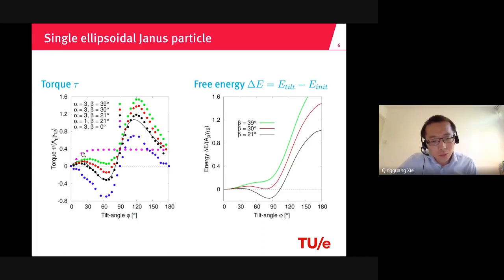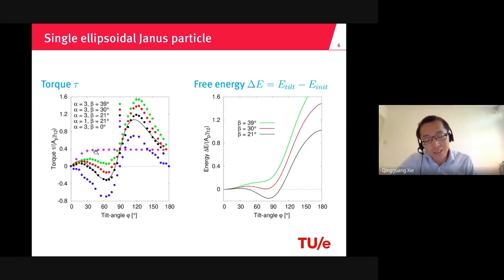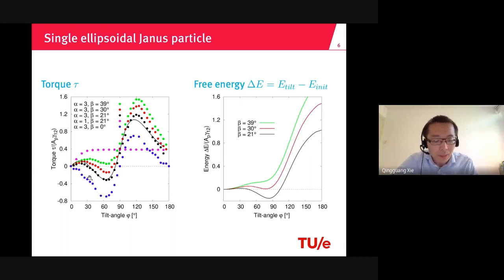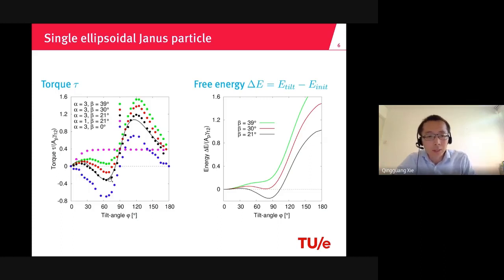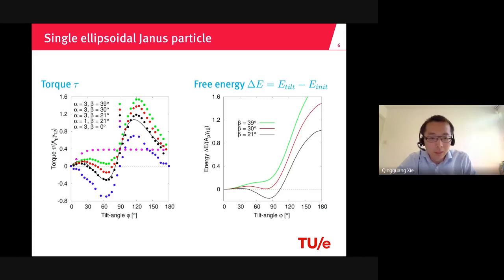I also show the torque for spherical Janus particles: the torque will decrease, then increase, then decrease to zero. Combining the torque for a spherical particle and the torque for an ellipsoidal particle gives a qualitative understanding of the torque on the ellipsoidal Janus particle. This means there is an interplay between the Janus property and the ellipsoidal property. The Janus property wants to keep the particle in the upright orientation, while the ellipsoidal property forces the particle to align parallel to the interface.